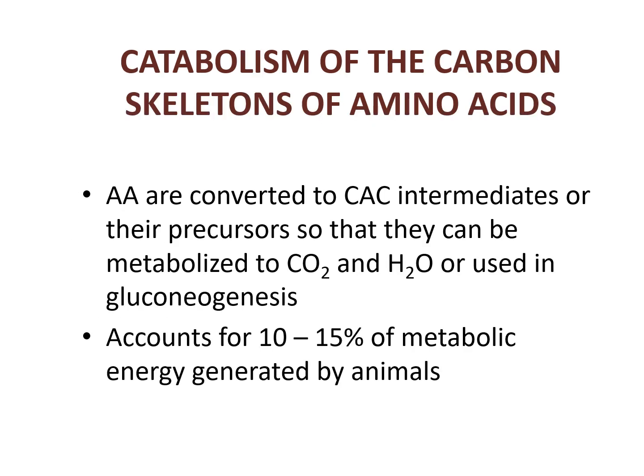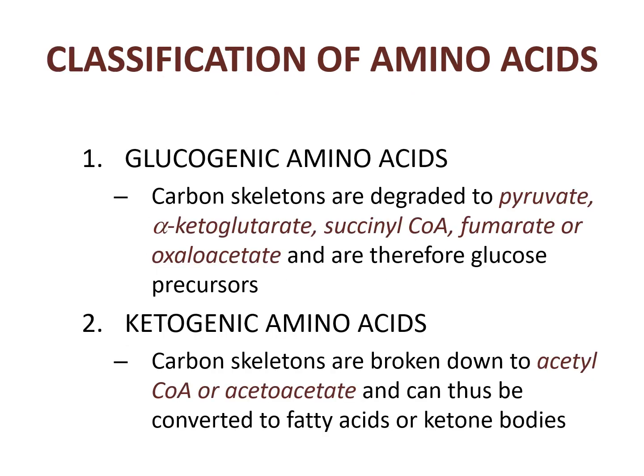Amino acids are converted to CAC intermediates or their precursors so that they can be metabolized to carbon dioxide and water, or used in gluconeogenesis. This accounts for 10–15% of metabolic energy generated. Amino acids could be classified according to the following categories.